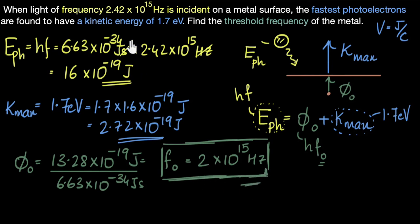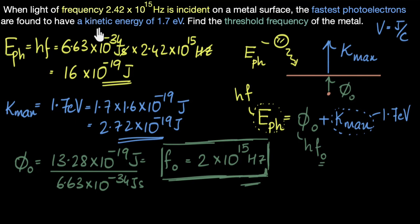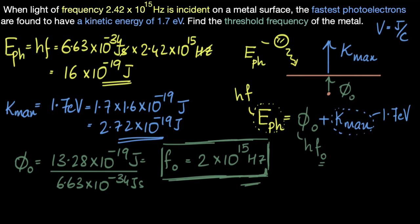As a sanity check, the incident frequency (2.42 × 10¹⁵ Hz) is greater than the threshold frequency (2 × 10¹⁵ Hz), which makes sense — otherwise we wouldn't have gotten photoelectric effect at all. The same question could be asked in different ways: given incident frequency and threshold frequency, find kinetic energy; or given kinetic energy and threshold frequency, find incident wavelength. Either way, always go back to Einstein's photoelectric equation — the Nobel prize-winning equation is all we need.